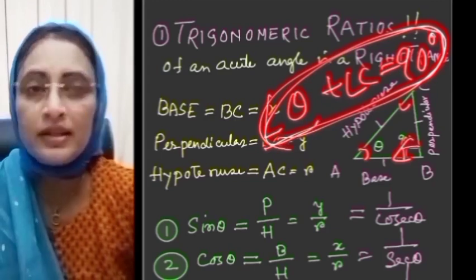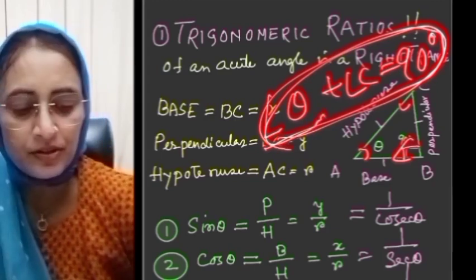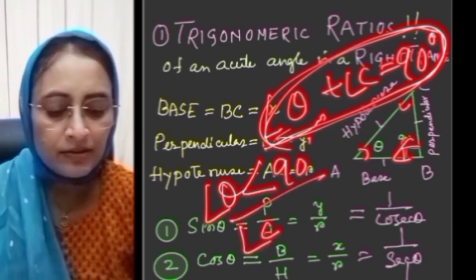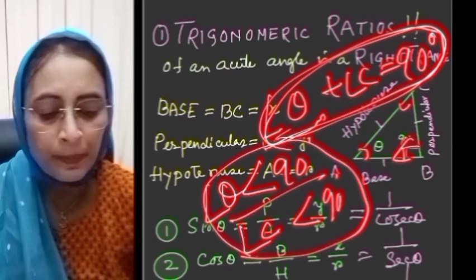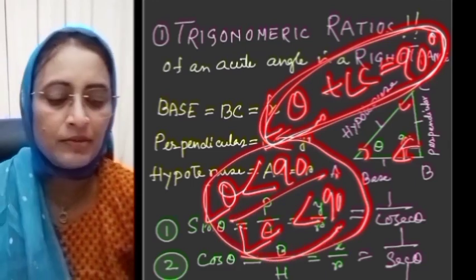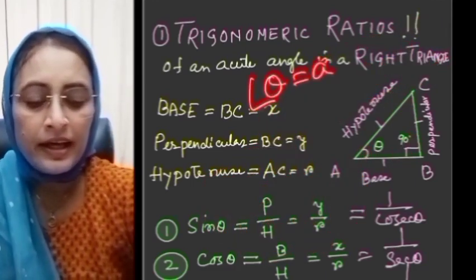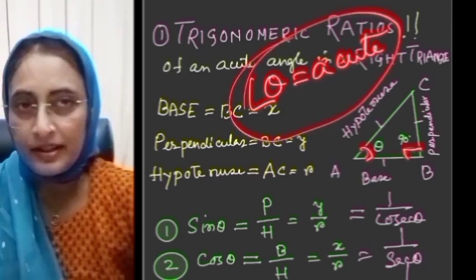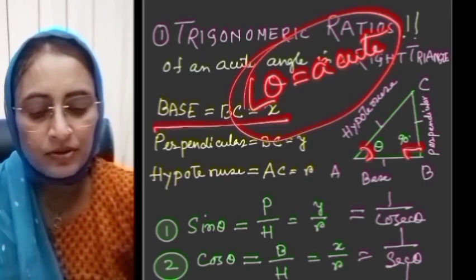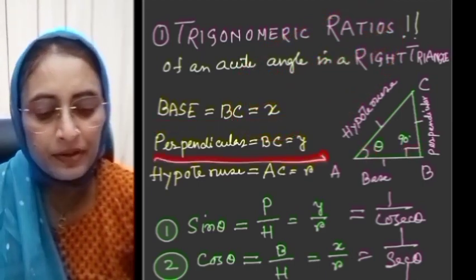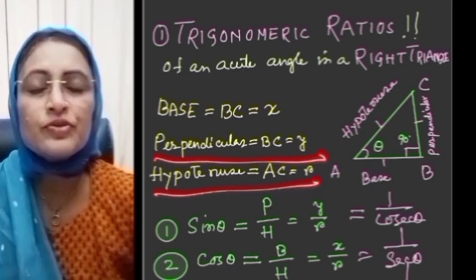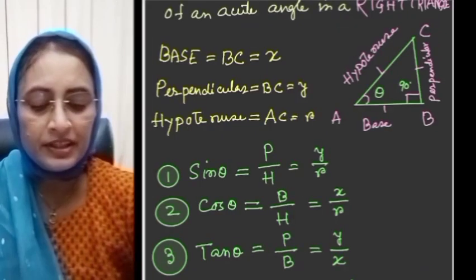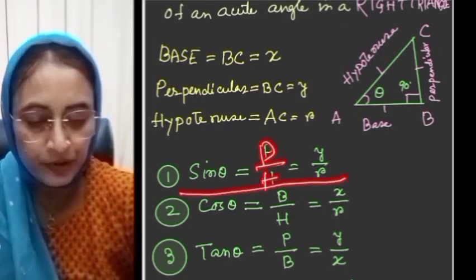Since angle B is 90 degrees and the sum of three angles is 180 degrees, angle theta is less than 90 degrees and angle C is also less than 90 degrees — so these are called acute angles. Here BC is equal to x, suppose BC equals x, perpendicular equals y, and hypotenuse equals r.